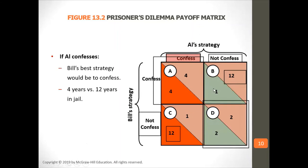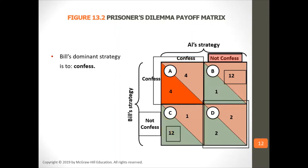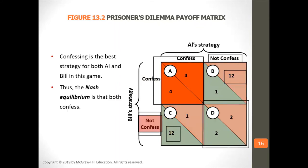If they both confess, they each get one year in prison. If one confesses and the other doesn't, the one who confessed gets one year and the one who didn't gets 12 years. If they both don't confess, they get two years; if they both confess, they get four years. The Nash equilibrium in this case is that they both confess, because if you confess while the other doesn't, you get one year — so each prisoner thinks the other won't confess, and they both end up confessing.